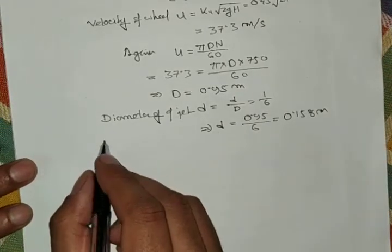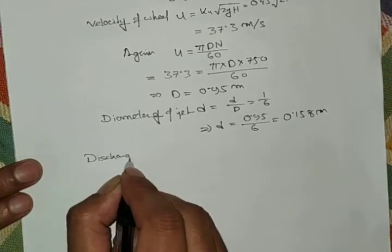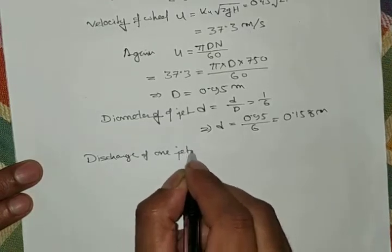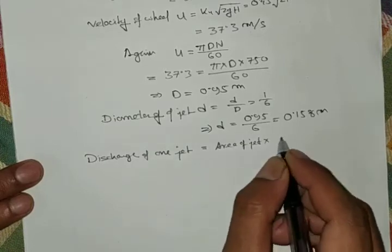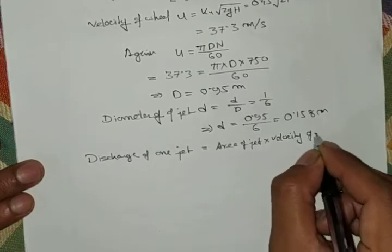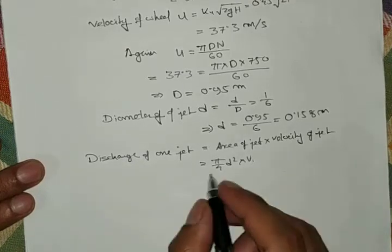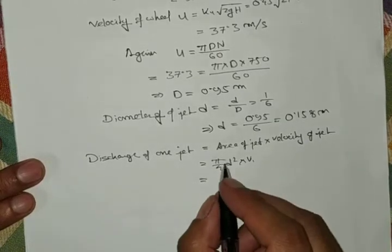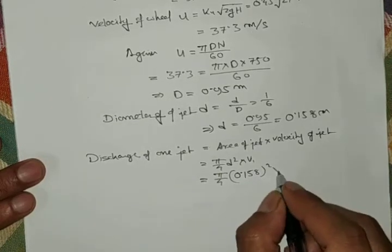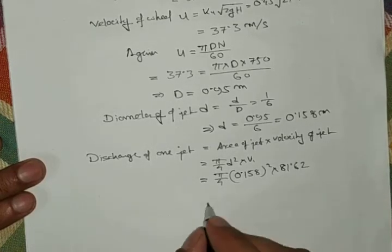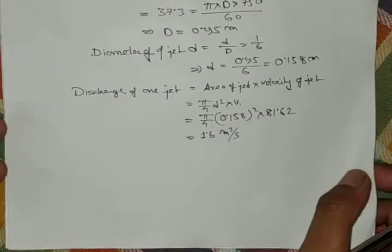The discharge through one jet is q = area × velocity = (π/4) × d² × V1 = (π/4) × (0.158)² × 81.62 = 1.6 m³/s per jet.